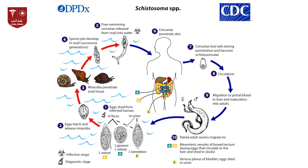Another important control point: cercariae live only about 72 hours — approximately three days. If they do not find a definitive host, they die. Therefore, a successful control program must prevent human contact with water.